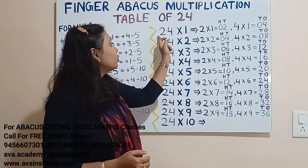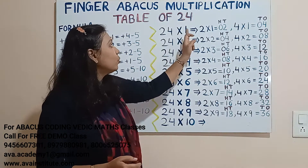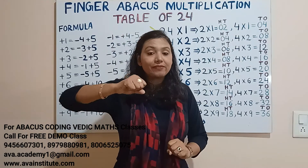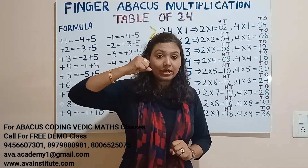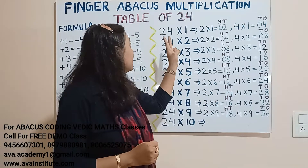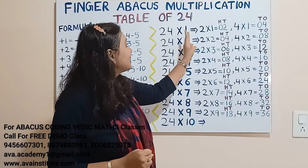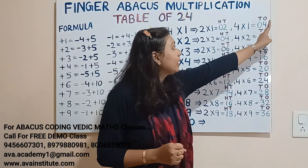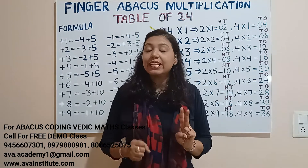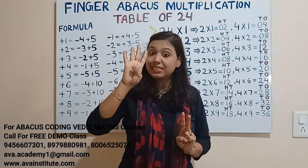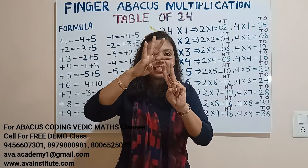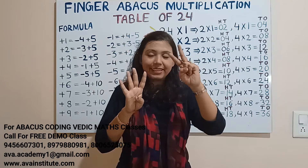24 ones are: 2 ones are 2 — in hundreds 0, in tens 2. So we represent 0 in the hundreds place and 2 in the tens place. Now 4 ones are 4 — in tens 0, in ones 4. In tens we represent 0, in ones we represent 4. So what is the answer? 24 — that is 20 plus 4, so 24.